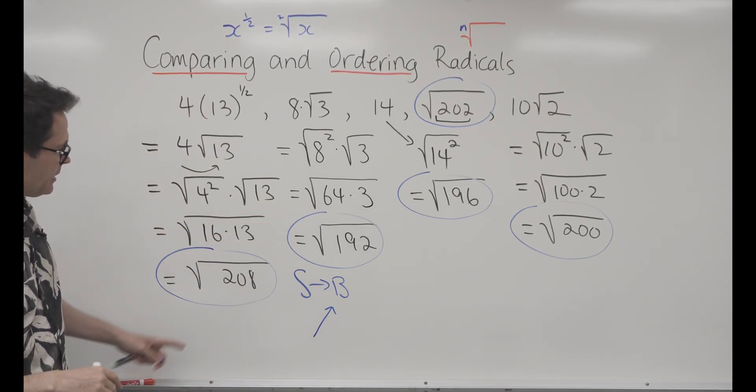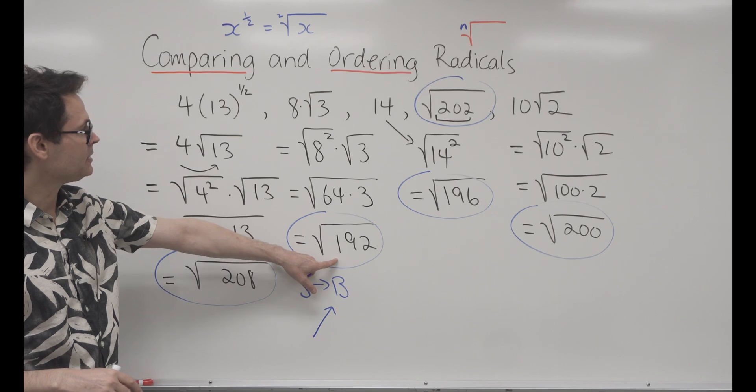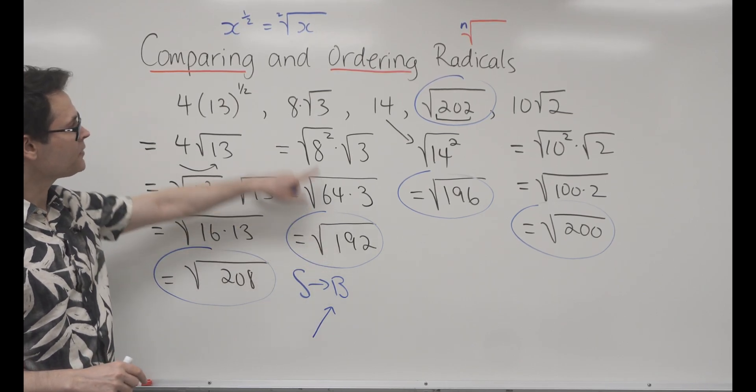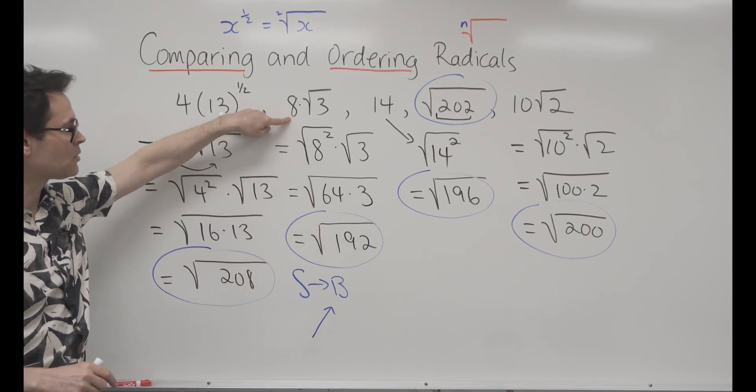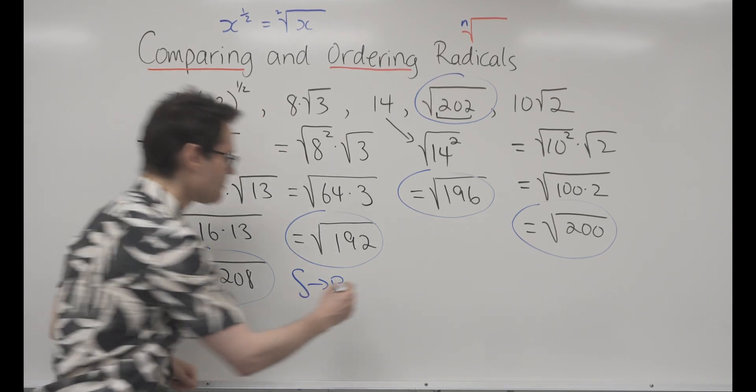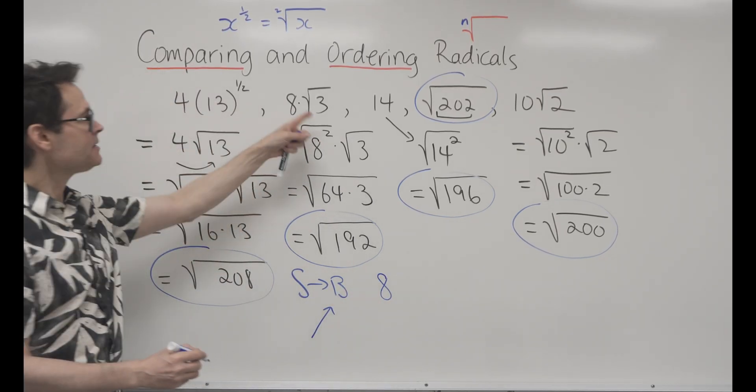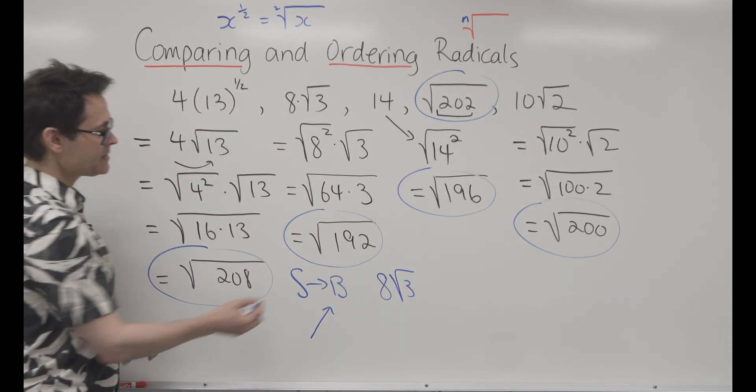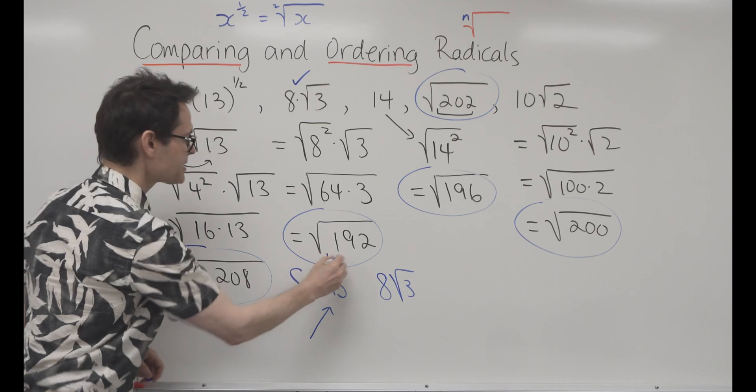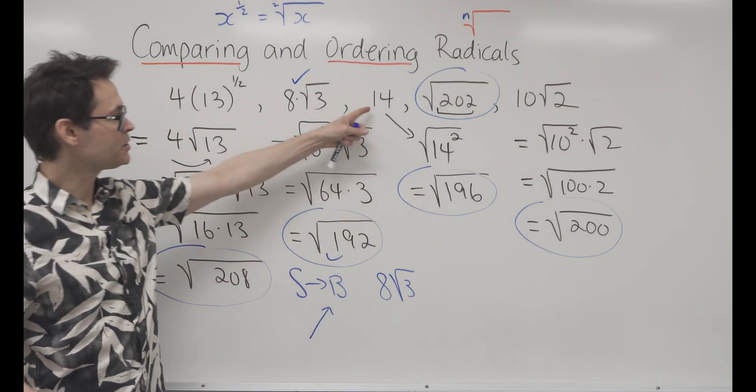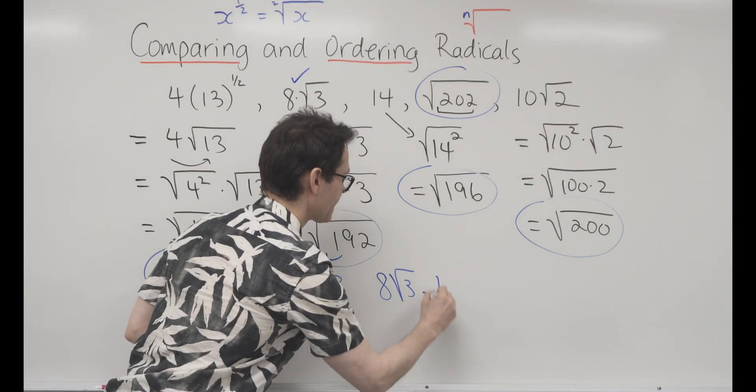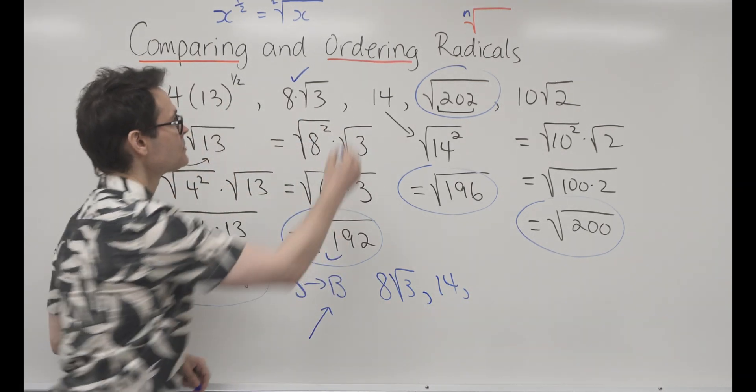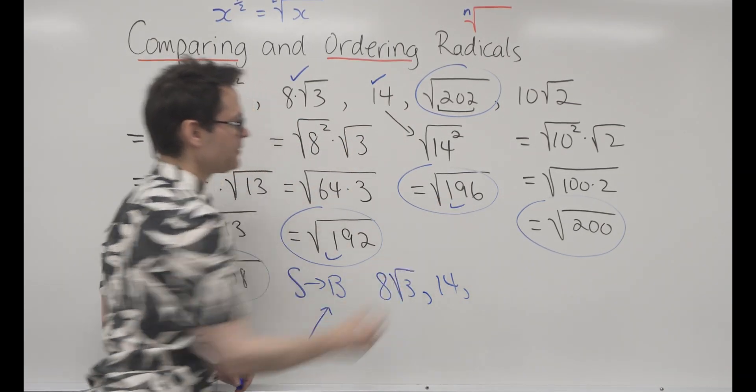The smallest number here, it looks like it's going to be 192. So I'm going to report the actual number that was given to me in the question. The smallest number is 8 times the square root of 3, and then that's dealt with. The next number is 196, which is 14. So I've dealt with those two.